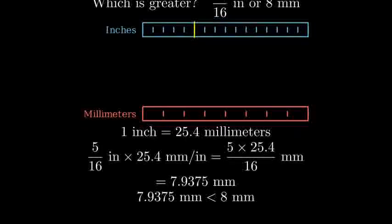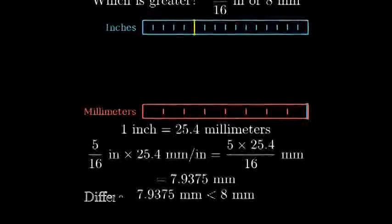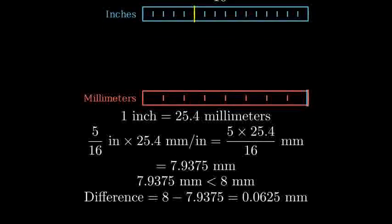Now we can compare 7.9375 millimeters with 8 millimeters. Let's mark these on our millimeter ruler to see the difference. As we can see, 5 sixteenths of an inch, which is about 7.94 millimeters, is slightly less than 8 millimeters.